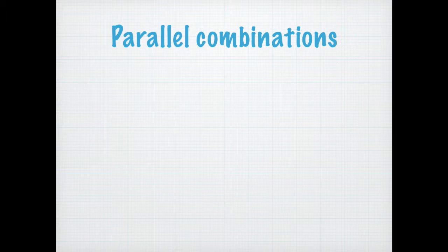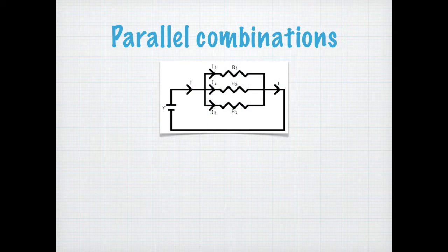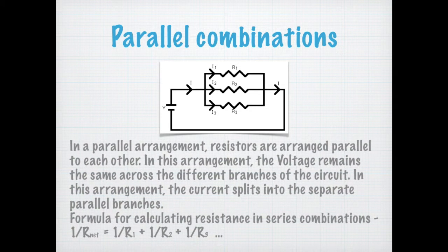In a parallel combination, the resistors are connected parallel to each other in their own separate branches. The distribution of current and potential difference works differently here — it's the other way around compared to series combinations. The resistor with the greatest resistance gets the least current, and vice versa. Keep that in mind.